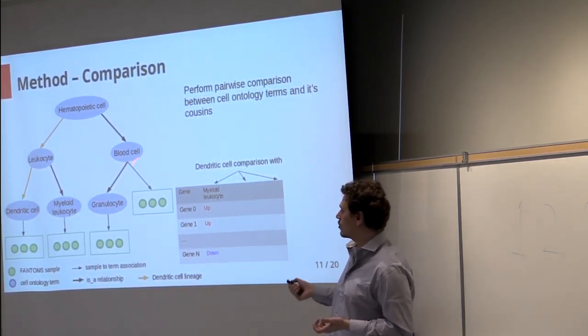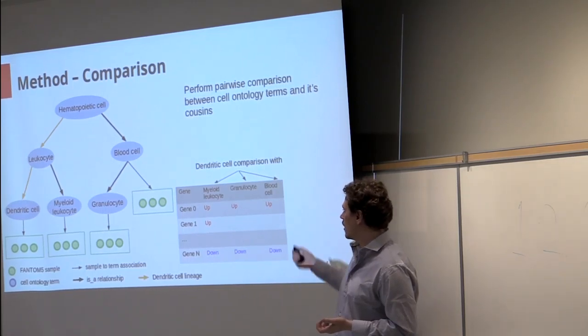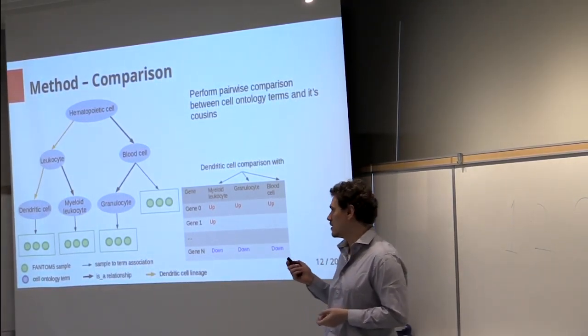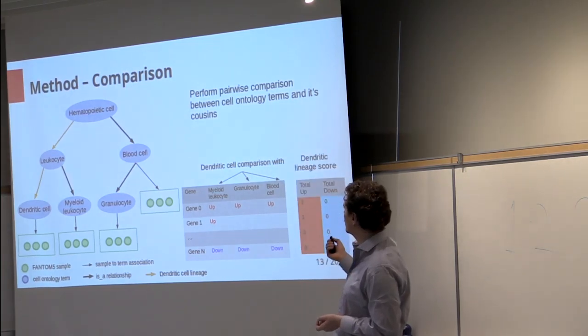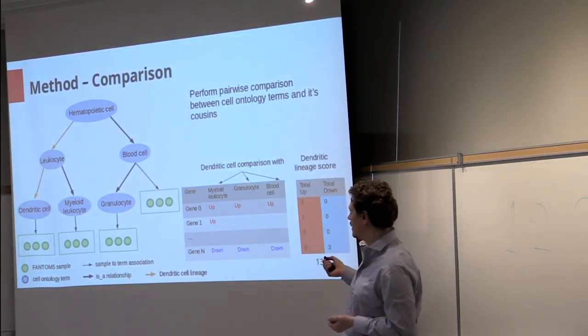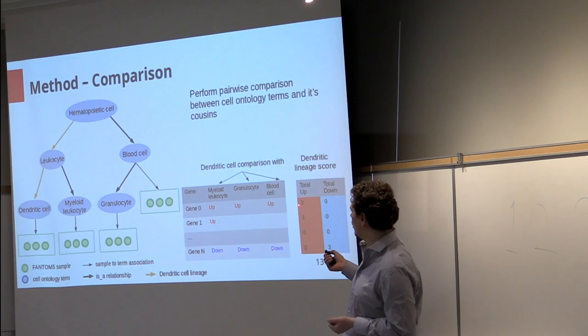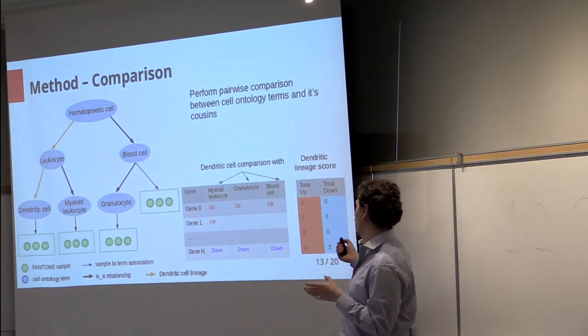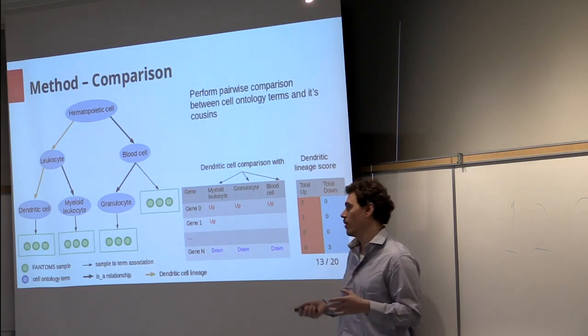We repeat this process for all the cousins of dendritic cells so we fill up this table, and we define what we call a lineage score, which is basically the number of times a gene is assigned the label up and the number of times a gene is assigned the label down.